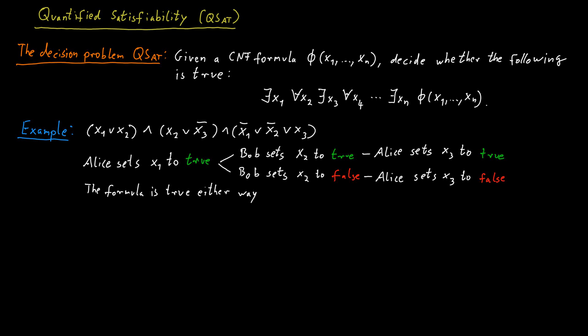If Bob sets x2 to false, then this third clause is already satisfied. But if Bob sets x2 to true, then x3 will be set to true as well by Alice, which will satisfy the third clause of the formula. So all three clauses of the formula will be satisfied in the end, will be true in the end, and therefore Alice can win this game following that specific strategy.